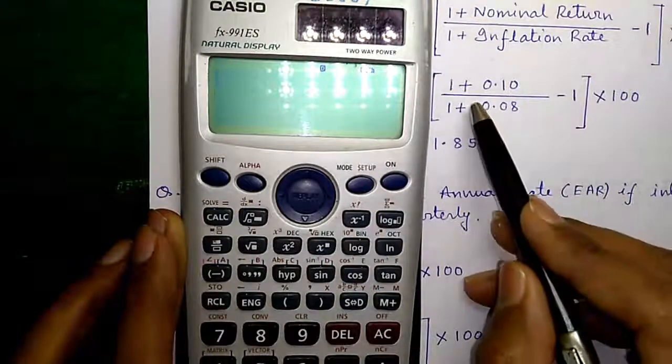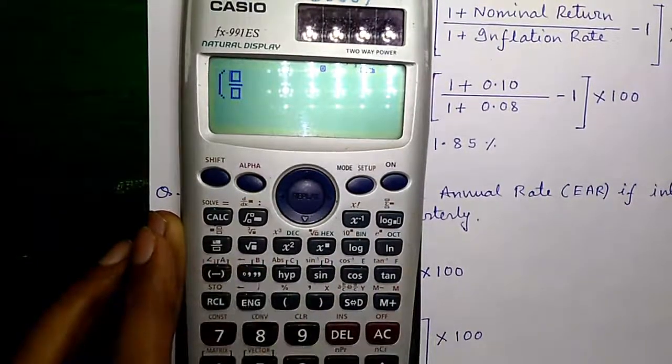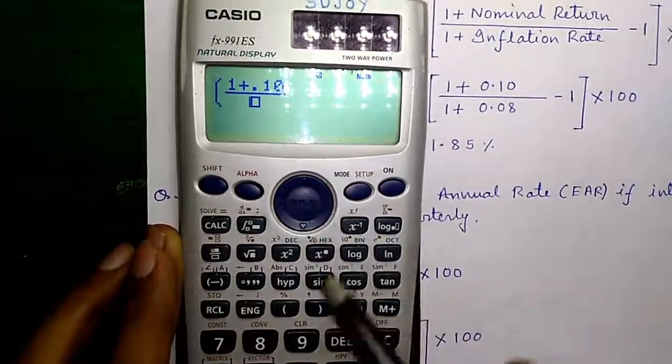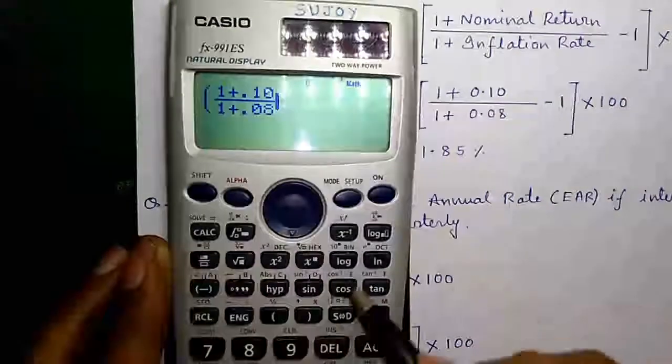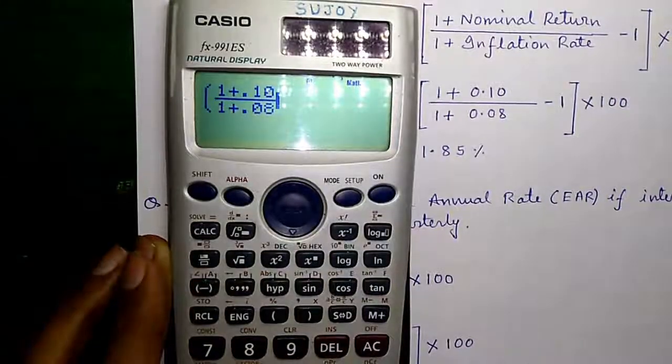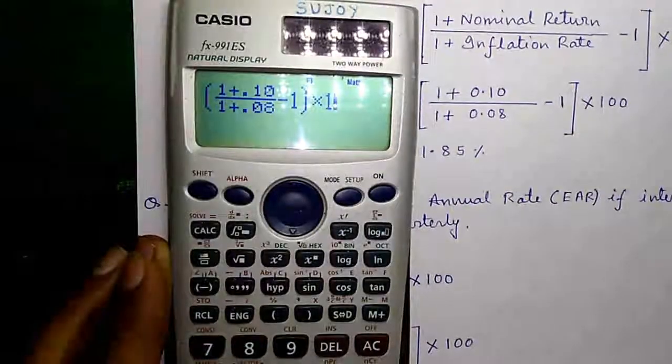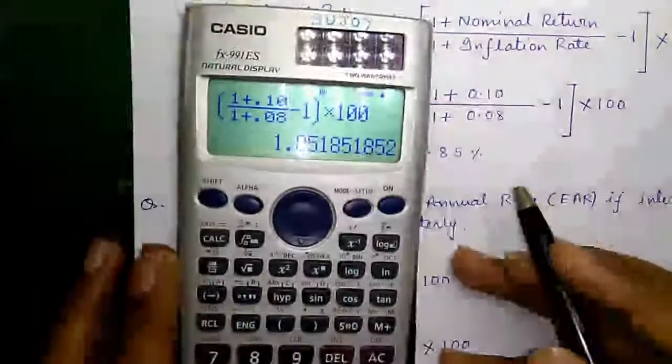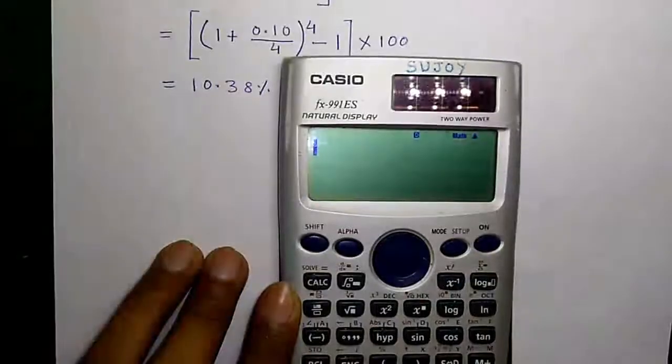Let's do it on calculator. For that press bracket fraction 1 plus 0.10 divided by 1 plus 0.08 scroll right minus 1 bracket close into 100. Press equals to is 1.85%.